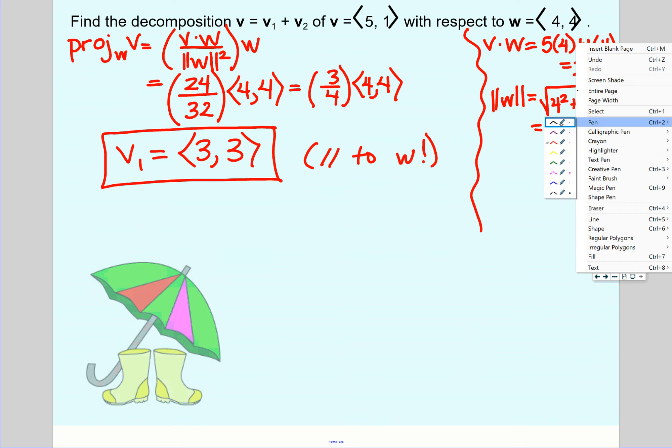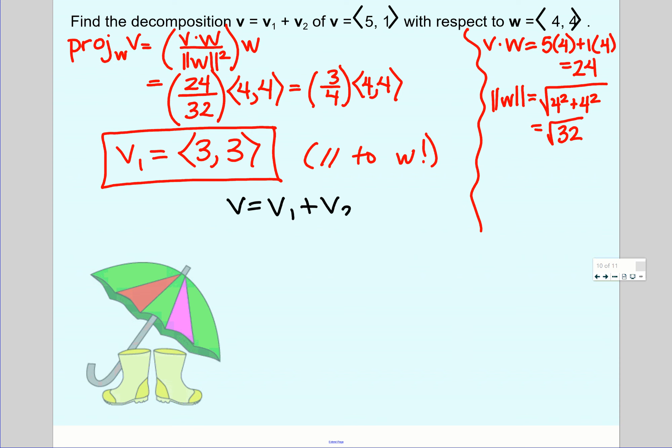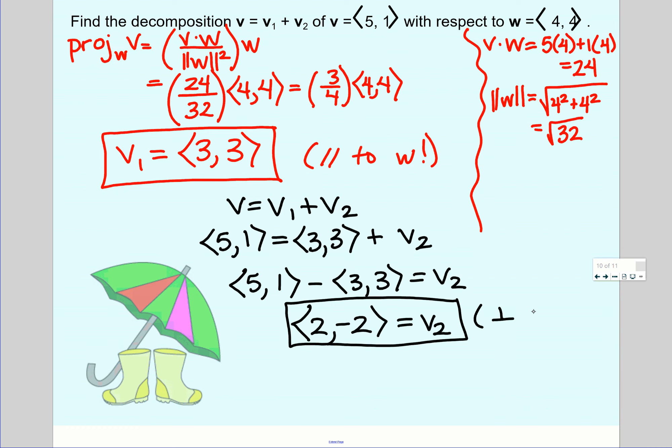To finish the decomposition, remember, v equals v1 plus v2. I already have two of the three pieces. Vector v is 5, 1. V1 is 3, 3. And v2 is what's missing. So to solve this equation, I just move that 3, 3 vector over to the other side. 5, 1 minus 3, 3 equals vector 2. When we subtract vectors, we just subtract like components. My first components, 5 minus 3, would give me 2. My second components, 1 minus 3, gives me negative 2. And that is vector v2, which, if you want to check it, will be perpendicular or orthogonal to w. You could do a quick little dot product with that and w and make sure you get 0. That's a great little fast way to check it at the end.